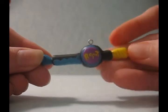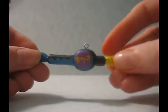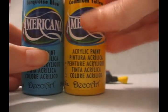So the materials that you will need to make this Bop It charm are blue and yellow acrylic paints, purple clay, yellow clay, black clay, and preferably this color blue.